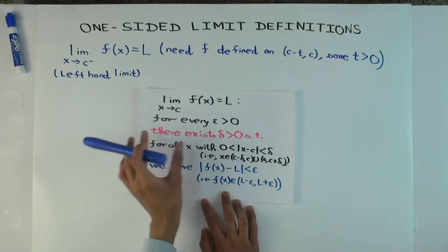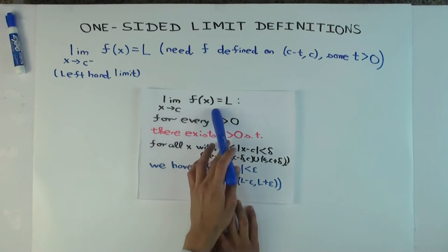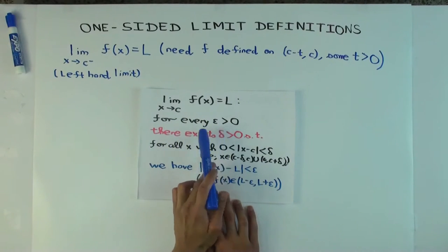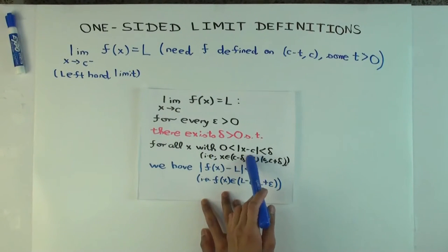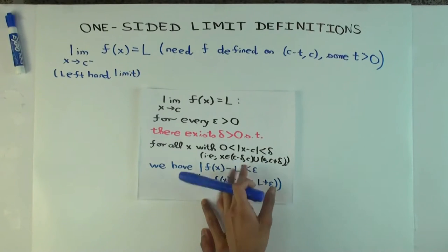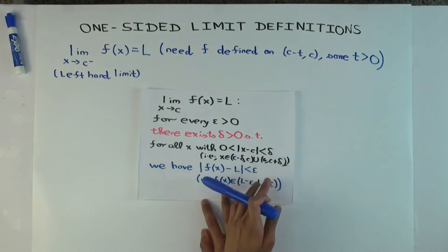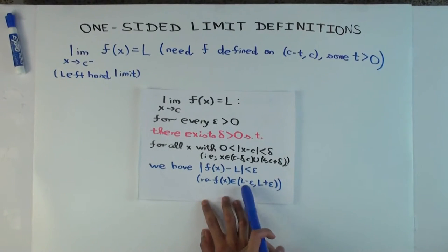So f has to be defined on the immediate left and the immediate right of c, and it says that this is true if the following holds. For every epsilon greater than zero, there exists a delta greater than zero, such that for all x which are within delta of c, either delta on the left of c or within a delta distance on the right of c, we have that f(x) is within an epsilon distance of L.